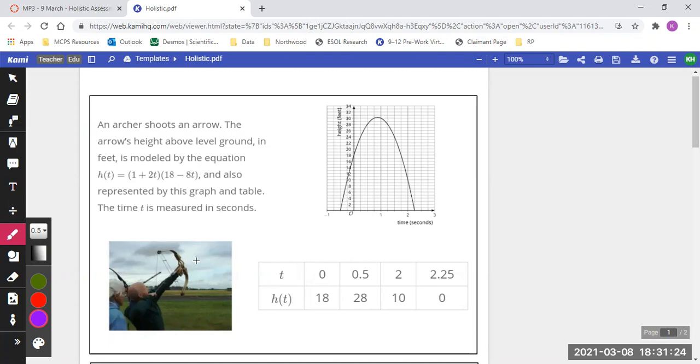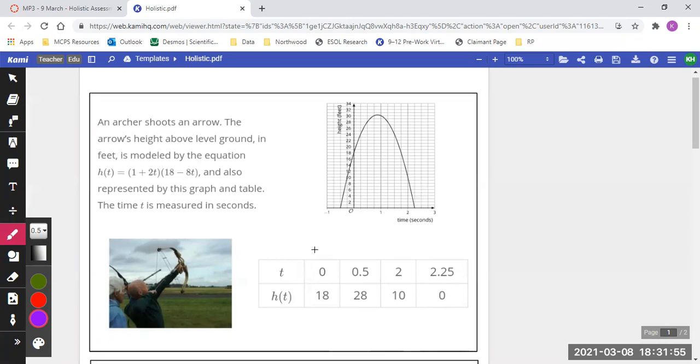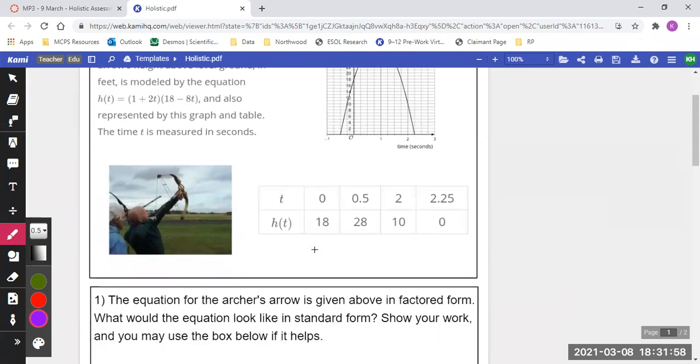The arrow's height above level ground in feet is modeled by the equation h of t equals parentheses, one plus two t, close parentheses, open parentheses, 18 minus eight t, and also represented by the graph and table. The time t is measured in seconds. So this equation here matches this graph here, matches this table here. All of these are showing equivalent representations of this expression.